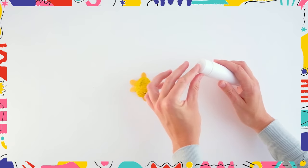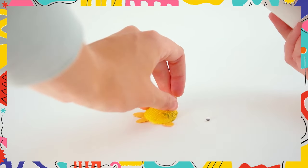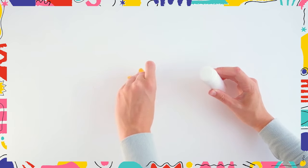Now take the googly eyes and glue them to the seashell. Make sure that it's placed at the pointed end of the shell.